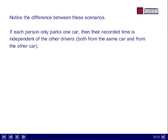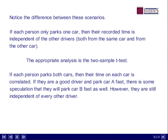The real difference is that in the first scenario — 10 people park A, the other 10 park B — each person's recorded time is independent of the other drivers. If I'm the first person and I park car A, I'm independent of every other driver: not only the nine other people who park car A, but also all 10 people who park car B — all 19 other drivers. My answer is independent; whatever time it took me to park has no impact on anybody else. The appropriate analysis is a two-sample t-test. We have people who park A, people who park B, a random sample from A, a random sample from B, and we're comparing the two means.